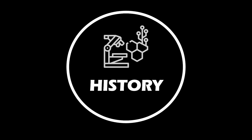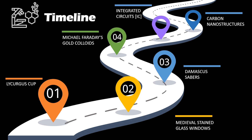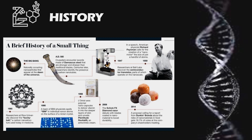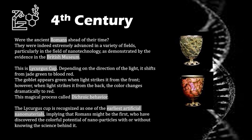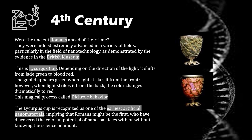Now let's go back in time and see where all this started — the history of nanotechnology. In the 4th century, were the ancient Romans ahead of their time? They were indeed extremely advanced in a variety of fields, particularly in nanotechnology, as demonstrated by evidence in the British Museum. The Lycurgus Cup, depending on the direction of the light, shifts from a jade green color to blood red. This magical color change process is called dichroic behavior, and the Lycurgus Cup is recognized as one of the earliest artificial nanomaterials.